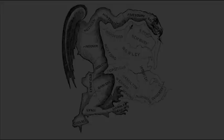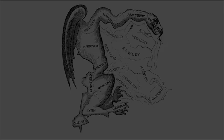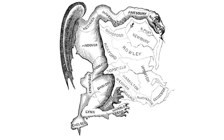Hello, and welcome to HistoryPod. On 11 February 1812, Massachusetts Governor Elbridge Gerry signed a bill that redrew electoral boundaries in the first example of gerrymandering.